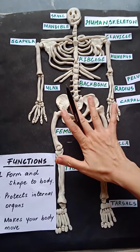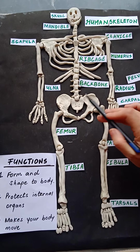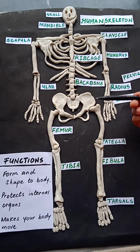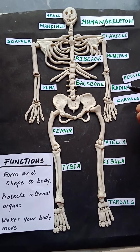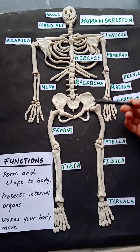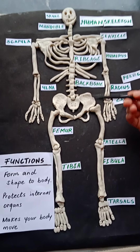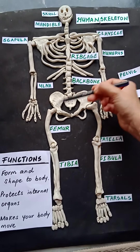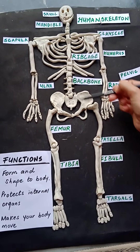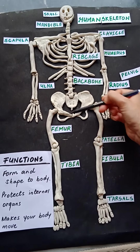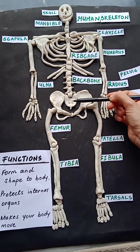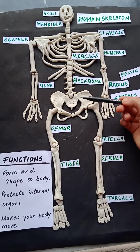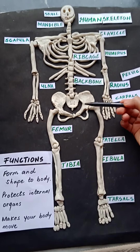These pelvic bones protect your kidneys, your genitals, your intestines, and your bladder — important internal organs in this lower region.